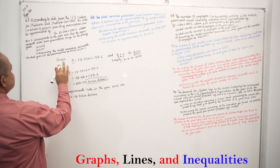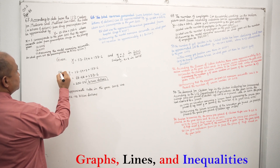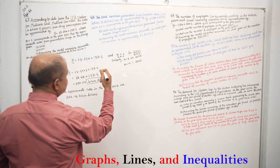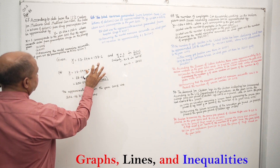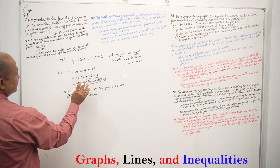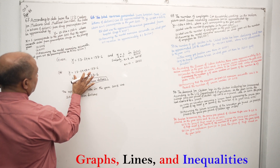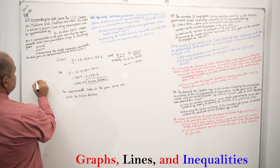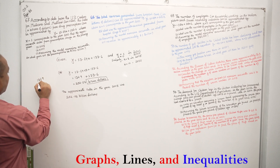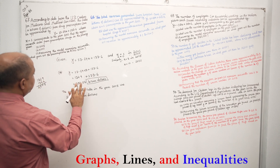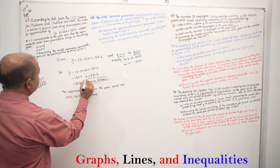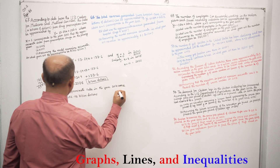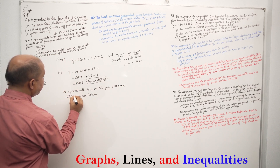Requirement B: find the approximate sales in 2010. X equals 10 in 2010. Y equals 13.69 multiplied by 10 plus 133.6, which equals 136.9 plus 133.6. The approximate sales in the year 2010 are 270.5 billion dollars.